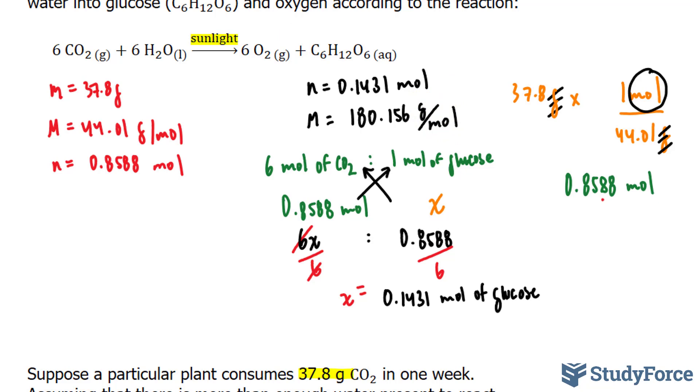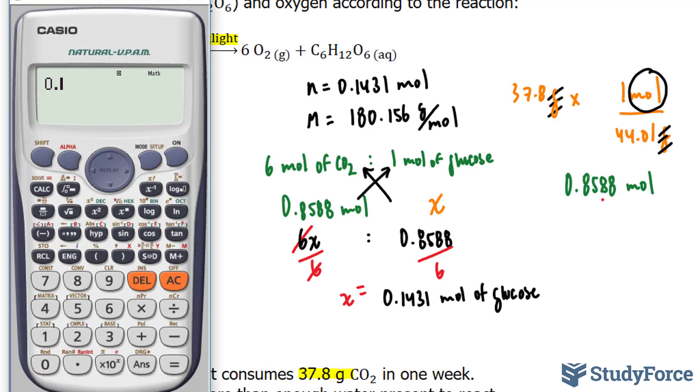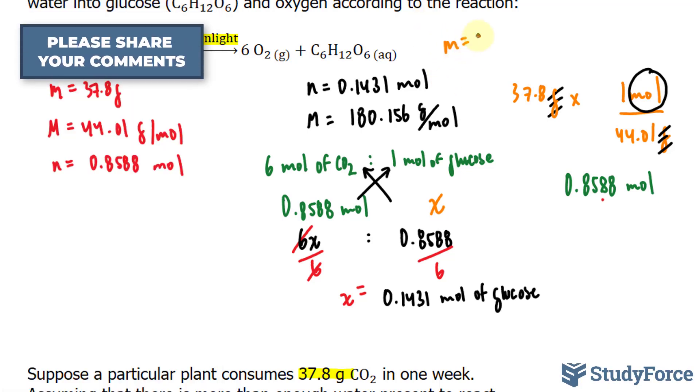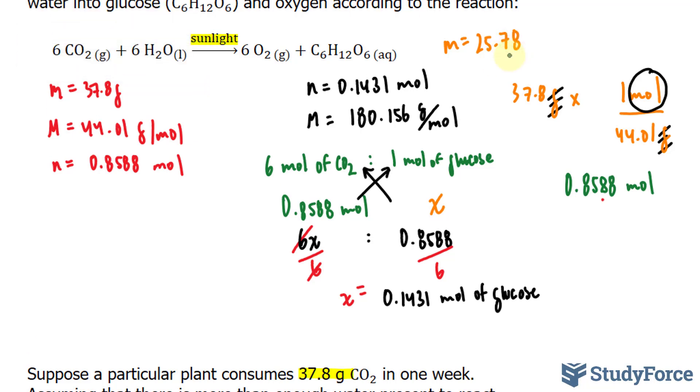Keep in mind that our answer should have three significant figures moving forward. So when I multiply this and this together, my final answer should have three digits. Let's go ahead and do that. 0.1431 times 180.156, and we end up with 25.78. Our mass is 25.78. Given that this number is greater than 5, this 7 will go up by 1, and we have 25.8 grams of glucose.